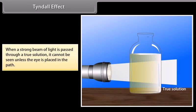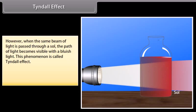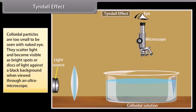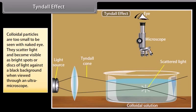Tyndall effect: When a strong beam of light is passed through a true solution, it cannot be seen unless the eye is placed in the path. However, when the same beam is passed through a sol, the path of light becomes visible with a bluish light — this is called the Tyndall effect. It is due to scattering of light from the surface of colloidal particles. Colloidal particles are too small to be seen with the naked eye; they scatter light and become visible as bright spots or discs against a black background when viewed through an ultramicroscope.